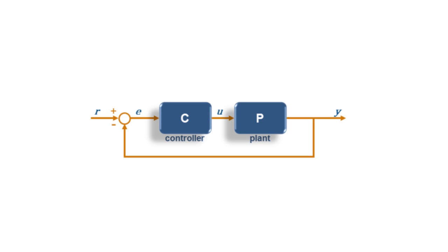Notice that by closing the loop, we are now making our controller respond to the difference or the error between the reference input signal and the system output signal. For this closed-loop architecture, Y is equal to P times C times E, which can be substituted by R minus Y.